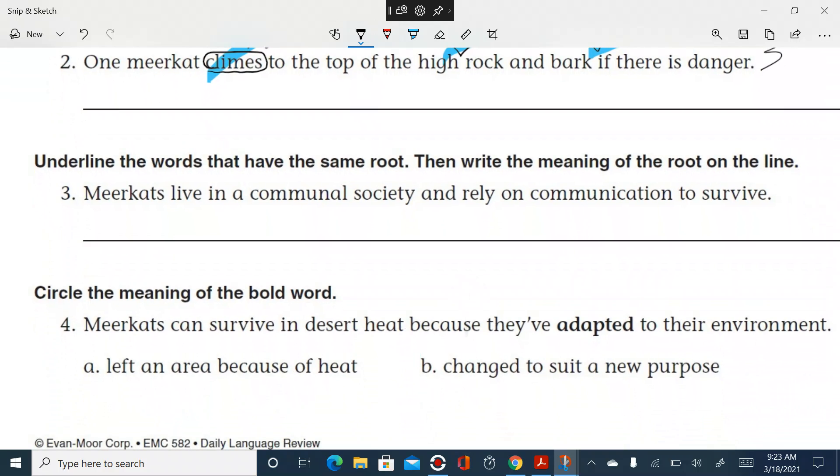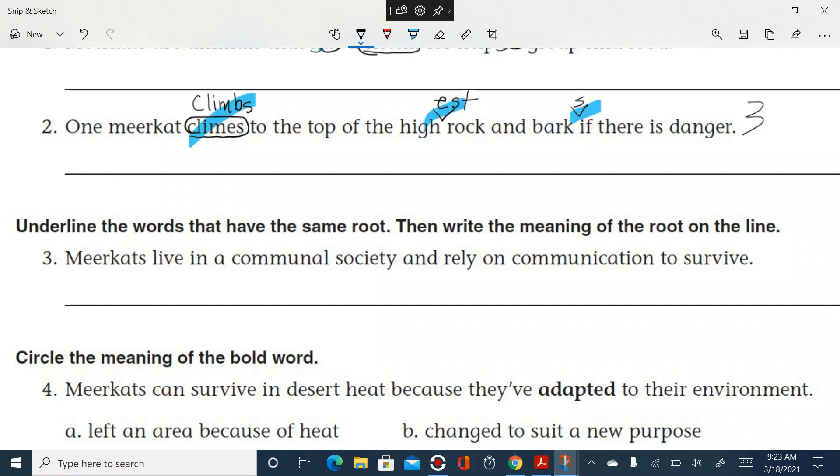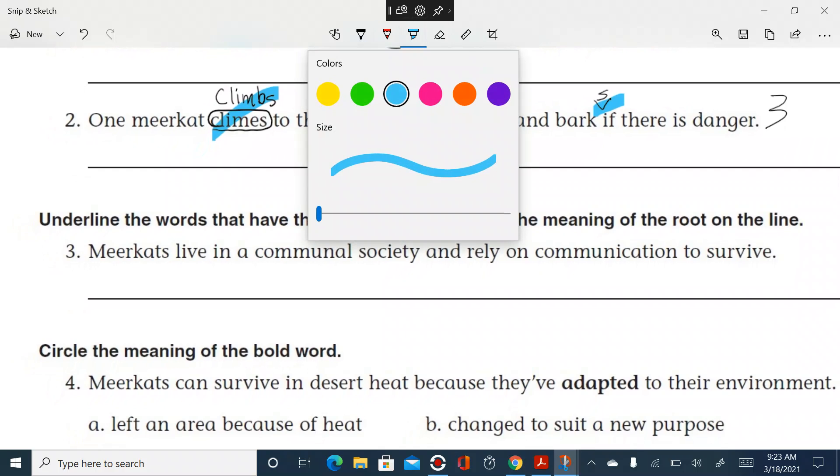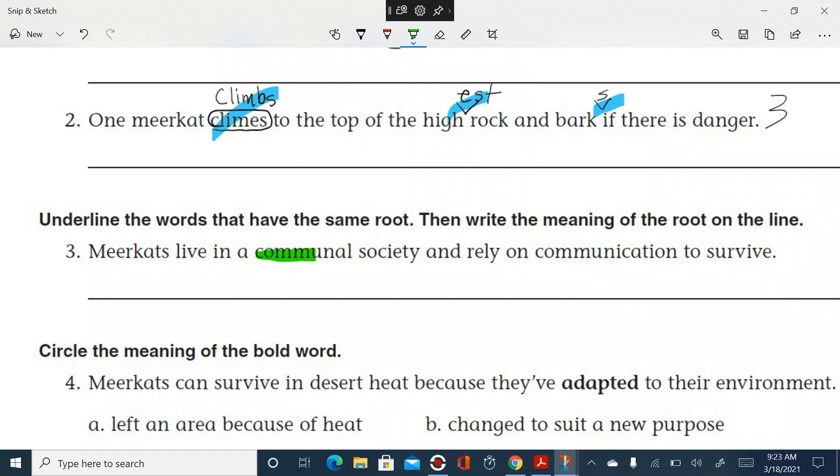Underline the words that have the same root, then write the meaning of the root on the line. Underline the words that have the same root. All right. So meerkats live in a communal society and rely on communication to survive. Ooh, do you see it? Let's see. Is it this and then this? So commune is the common root word. And then it says, what's the meaning? What do you think the meaning of the root is? Well, let's read the sentence again. Meerkats live in a communal society and rely on communication to survive. What do you suppose that word commune means?